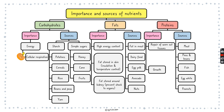So what are the sources of carbohydrate? There are two things: a polysaccharide called starch, and we can find starch in potatoes, cereals, rice, beans and peas, and yam. We can also find simple sugars like monosaccharides and disaccharides in honey, cane, and fruits.